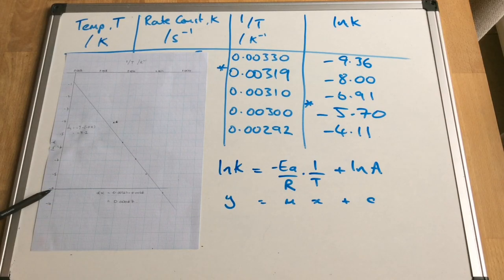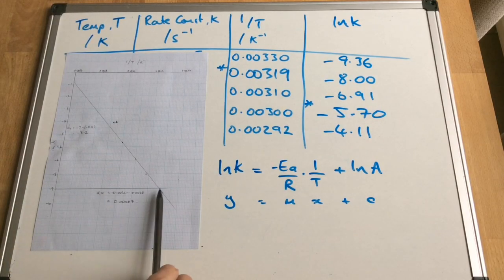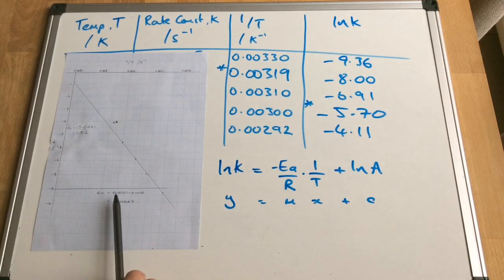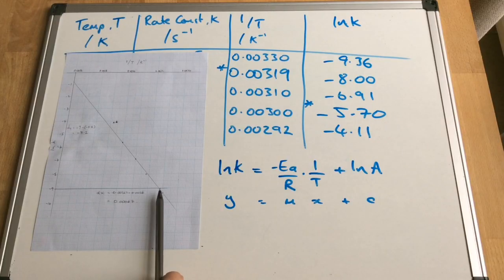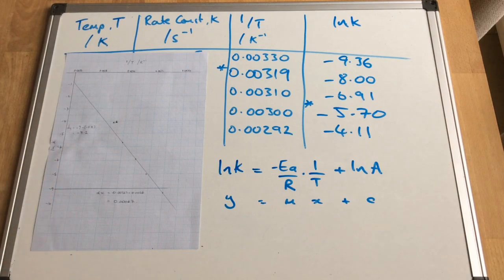So you can see that my change in y is coming out at minus 8.2. So I've gone from minus 9 to minus 0.8, and that gives me a change of negative 8.2. So my change in the x-axis is 0.00327, which is what I've got here, and I'm starting right here, so that's nice and easy, 0.0026. So I've got a change in my x-axis at 0.00067.